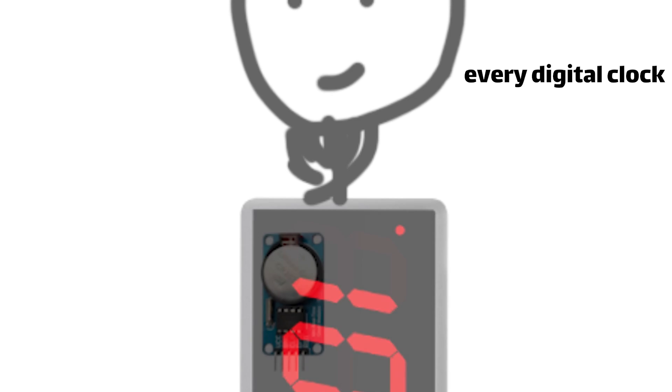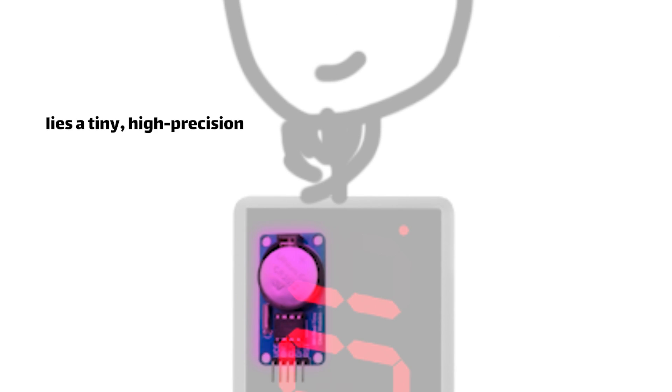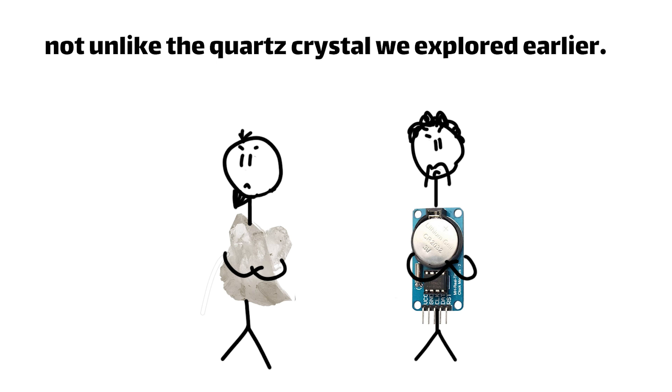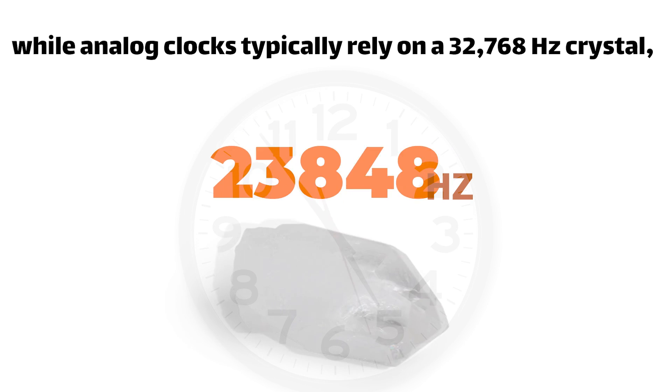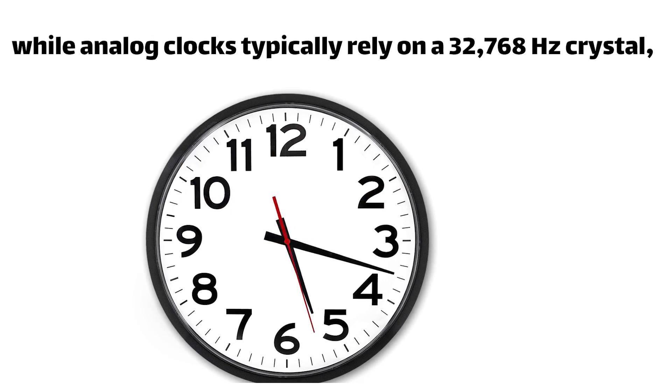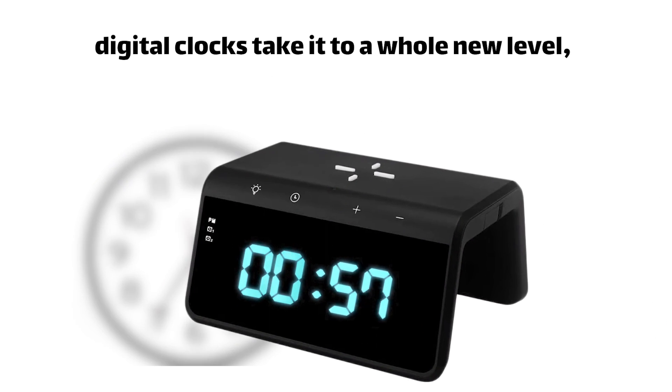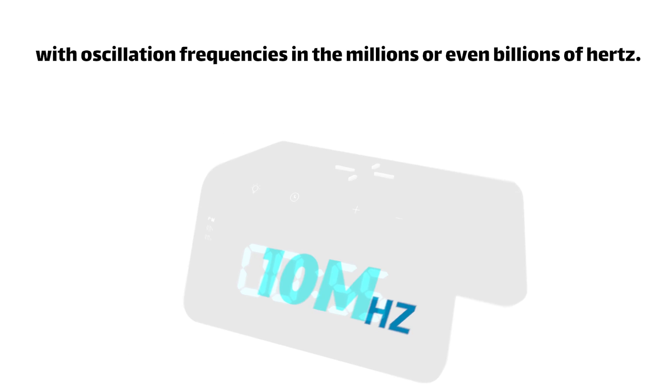At the heart of every digital clock lies a tiny, high-precision oscillator, not unlike the quartz crystal we explored earlier. But here's the key difference. While analog clocks typically rely on 32,768-hertz crystals, digital clocks take it to a whole new level, with oscillation frequencies in the millions or even billions of hertz!